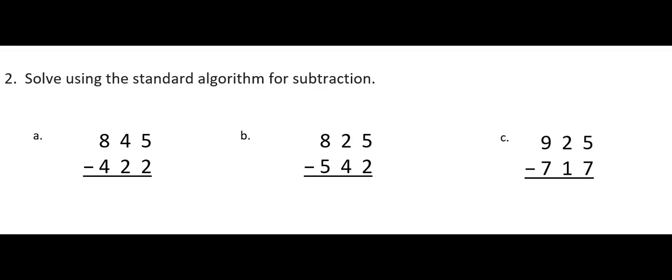Now we're going to think about that process as we perform the subtraction without the use of a place value chart. In question A, I have 845 minus 422. Starting in my ones place, 5 minus 2 is 3. In my tens place, 4 minus 2 is 2. And in my hundreds place, 8 minus 4 is 4, for a final answer of 423.